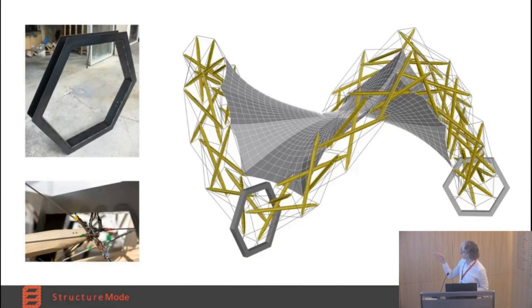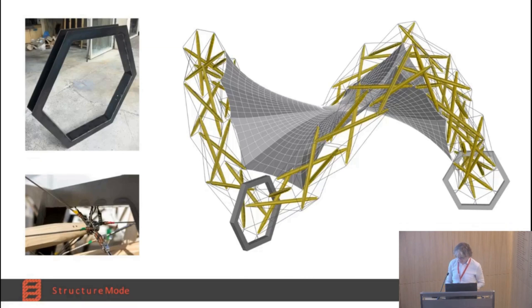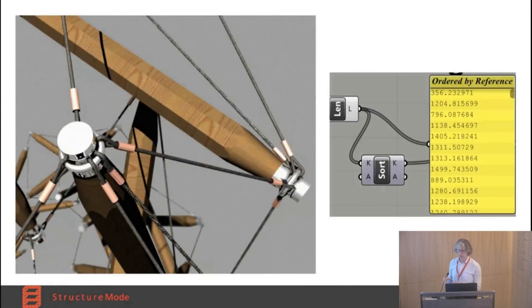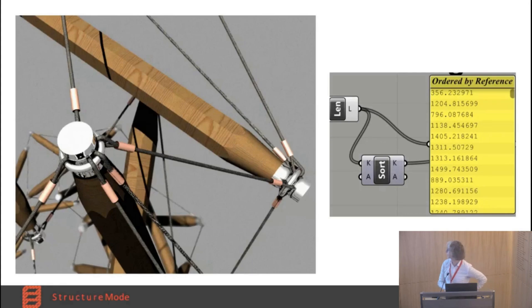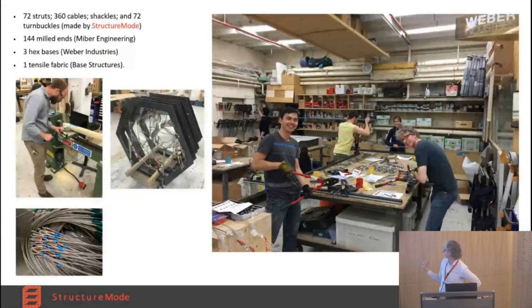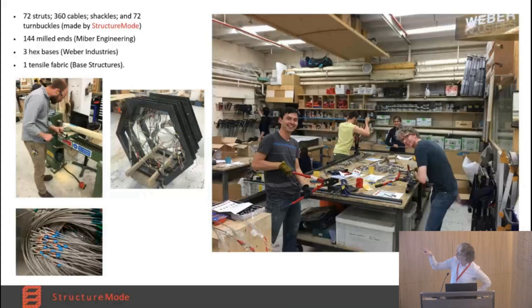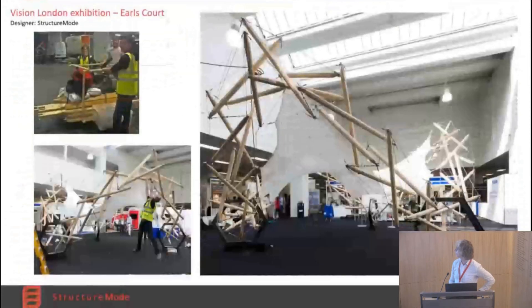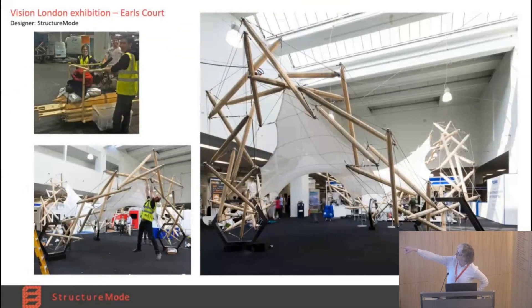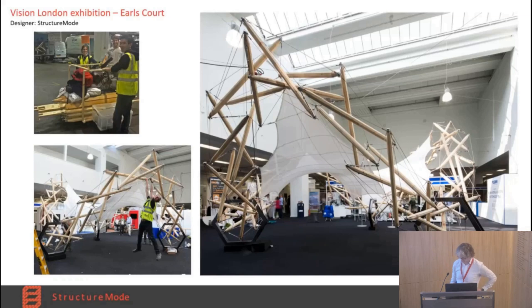We took our Grasshopper model from the Rhino script and entered all of the offsets. This is the original model with no offsets on the nodes; we introduced all of the offsets on the end of each strut, and so could directly get our output of the cable and strut lengths. We went a bit overboard on the render but thought we'd make it look nice. We then made it ourselves in the workshop — all the struts and cables — with Neighbour Engineering milling the ends, Weber Industries doing the hex bases, and Base Structures providing the tensile fabric.